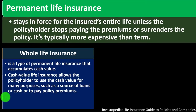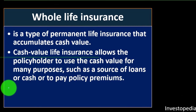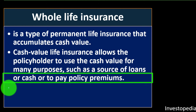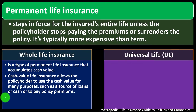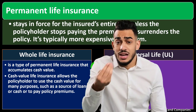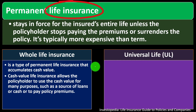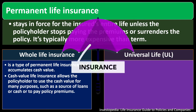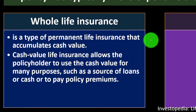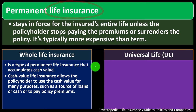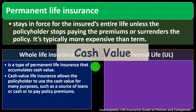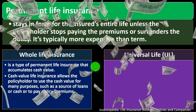Whole life insurance is a type of permanent life insurance that accumulates cash value. Cash value life insurance allows the policyholder to use the cash value for many purposes, such as a source of loans, cash, or to pay policy premiums. Whole life gets a little more complex because this component could be argued to be kind of like an investment as well as like life insurance — whereas term life insurance is pretty clearly just buying life insurance for a set term.